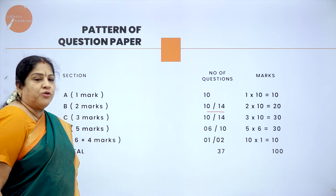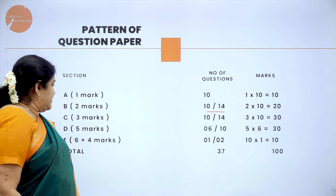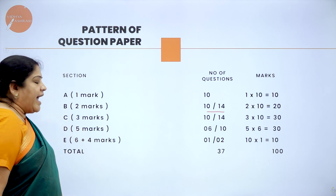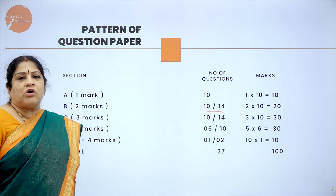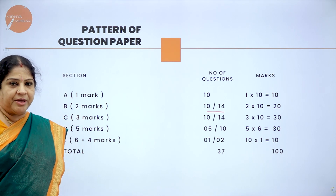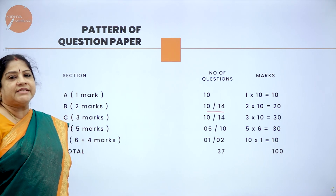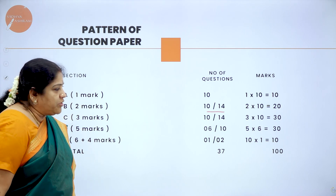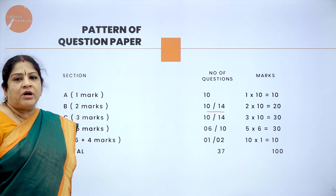Section C also has 14 questions out of which you need to answer 10 questions, giving you 30 marks. Section D is 6 out of 10, again 30 marks. Section E consists of 2 questions, each with 2 subdivisions — those will be your 49th and 50th questions. The first subdivision carries 6 marks and the second carries 4 marks, and you have to answer any 1 question, giving you 10 marks. On the whole, the paper is for 100 marks.